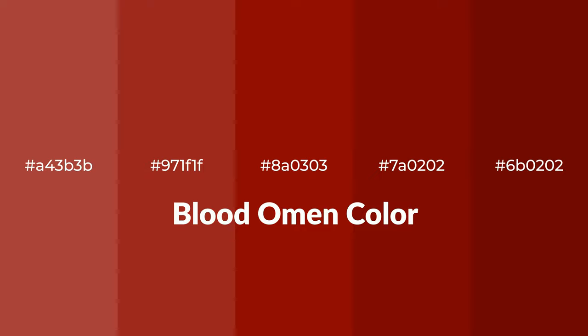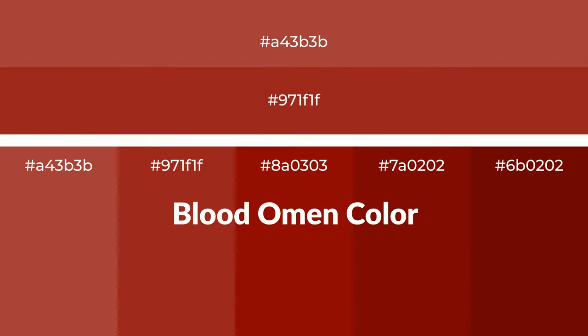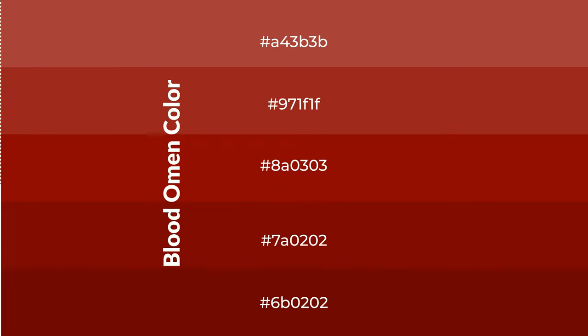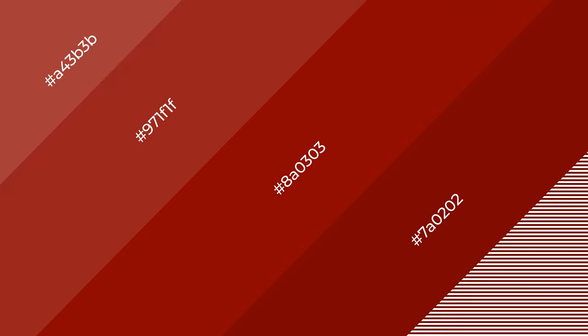Warm shades of blood omen color with red hue for your next project. To generate tints of a color, we add white to the color — tints create light and exquisite emotions. To generate shades of a color, we add black to the color, and it is used in patterns, 3D effects, and layers. Shades create depth and drama.